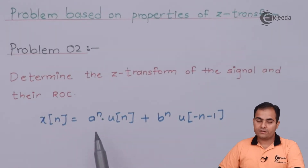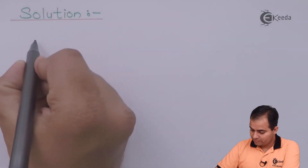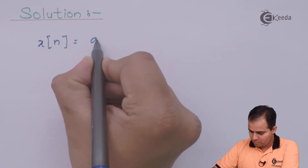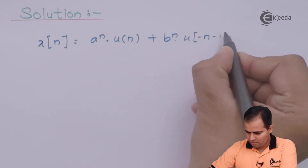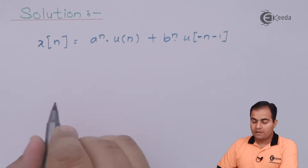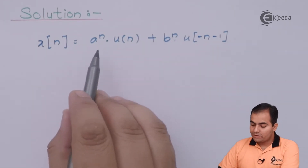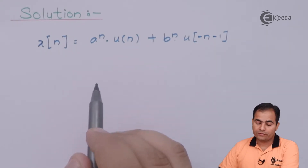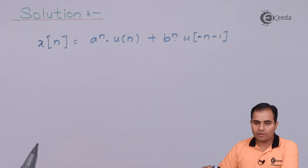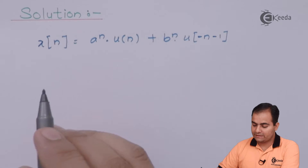We will first find the Z transform and then move on to the ROC. The question is: find the Z transform of A^n U(n) + B^n U(-n-1). Since we have A^n, we will use the time scaling property, but first we apply the Z transform on both sides.